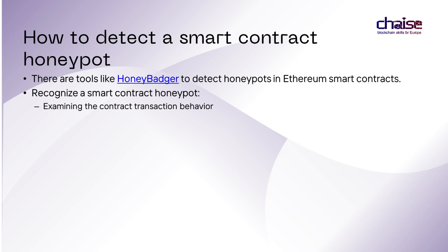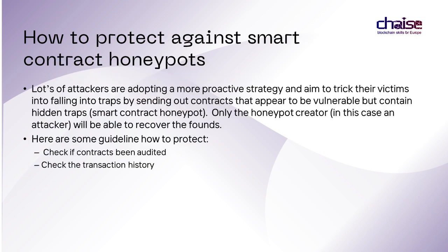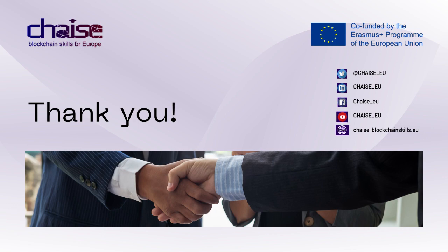There are many tools that allow scanning contracts for vulnerabilities before deploying them on the blockchain. Unfortunately, attackers may also use these tools to find vulnerable contracts and exploit them easily. One such tool is HoneyBadger, which helps detect honeypots in Ethereum smart contracts. The main way to recognize a smart contract honeypot is by examining the contract's transaction behavior. Lots of attackers are adopting a more proactive strategy, aiming to trick their victims into falling into traps by sending out contracts that appear vulnerable but contain hidden traps. You can protect yourself by checking if the contract has been audited and checking its transaction history. Thank you for listening to this lecture.